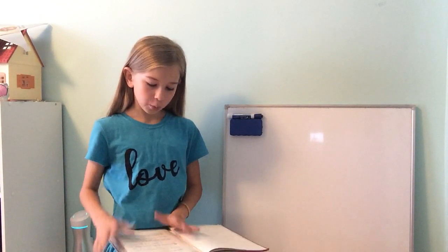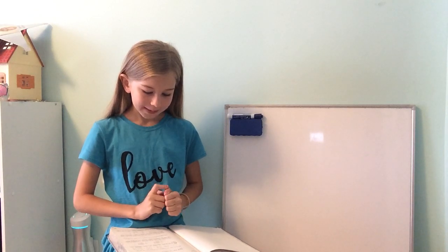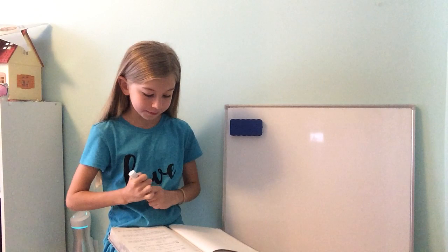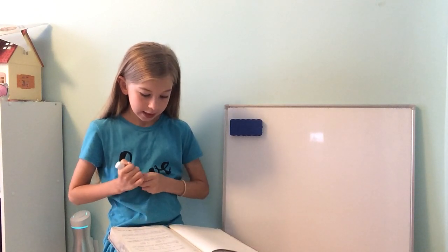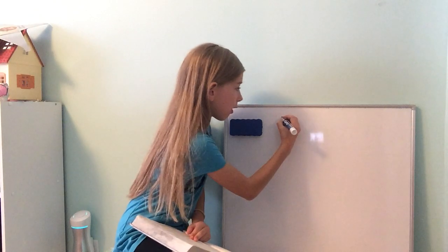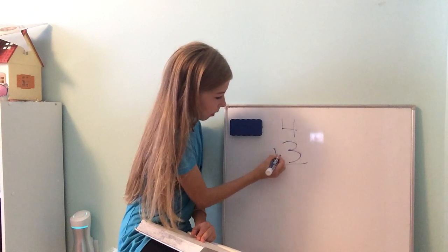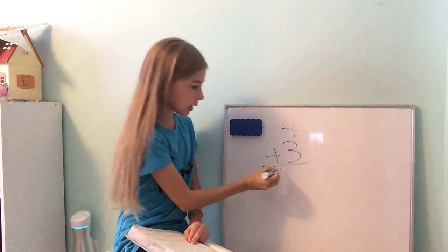So when we add, we combine two groups into one group. The numbers that are added are called addends, and the answer is called the sum. So if we show 4 plus 3, that would equal 7.